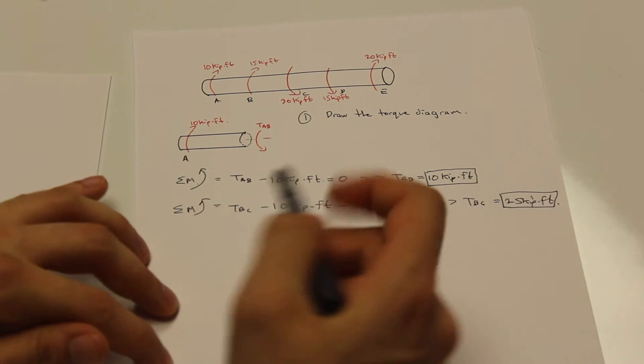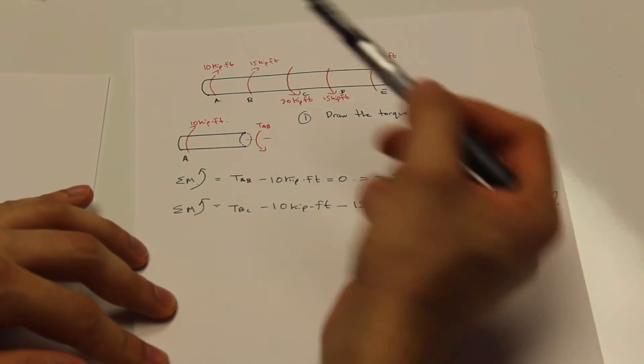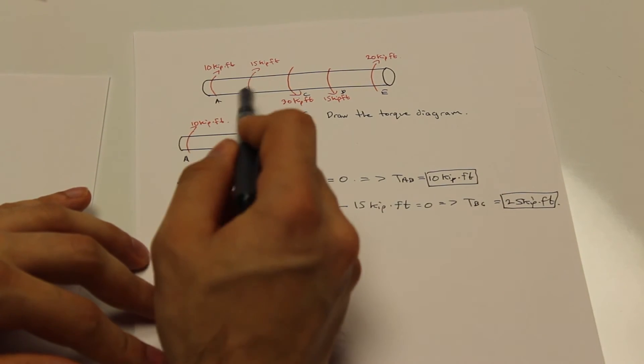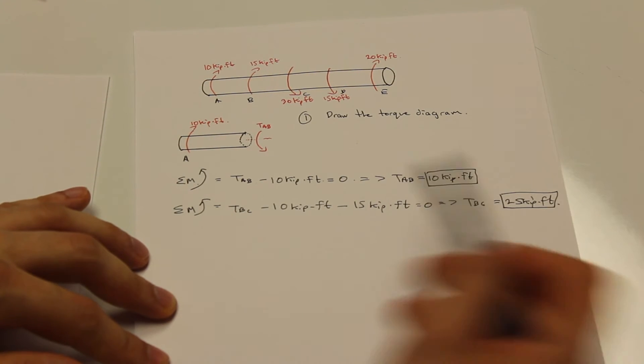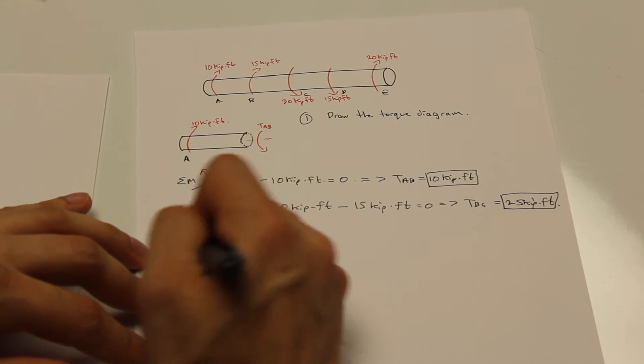So what I've done there is exactly the same thing. I cut between BC and we assumed a positive torque direction of TBC, and then we just had two external forces, 15 and 10. We added those together and we got 25 kips per feet, that's kip feet rather.